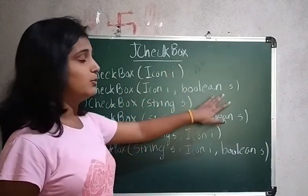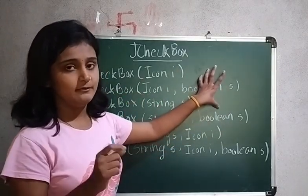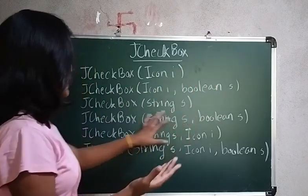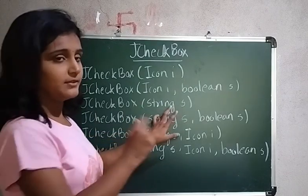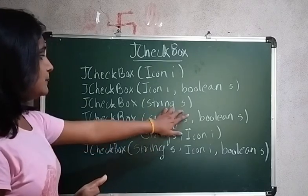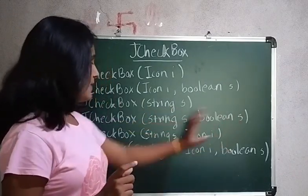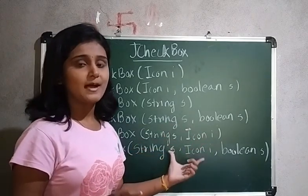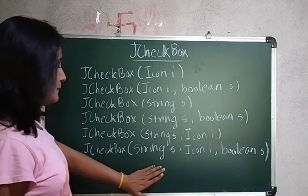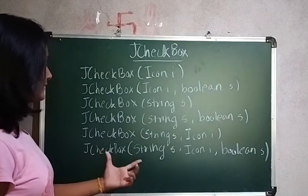You can pass the icon with a boolean status — if it is true the checkbox will be checked, if false it will be unchecked. You can specify a string label that appears at the side of the checkbox. You can pass the string with a boolean status, or pass both a string and an icon together.